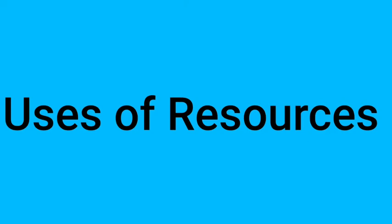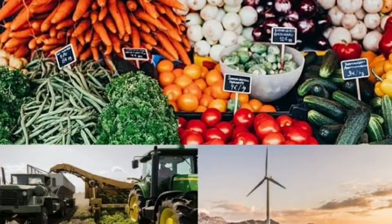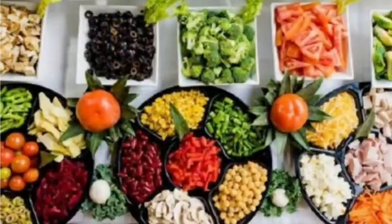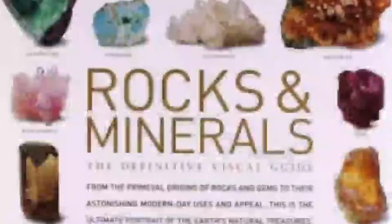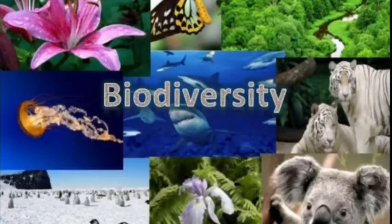Now let's see what are the uses of resources. Resources are useful to us in many ways. Resources can be used as food, as source of raw material, and as energy resources. Now let's see how resources can be used as food. We depend on many resources in order to fulfill our food requirement — land, water, minerals, fossil fuels, biodiversity, etc. are used for the production of food.